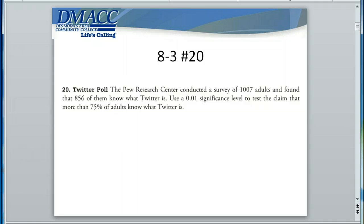When we perform hypothesis testing, one of the first things we want to do is identify the claim, formulate our hypotheses, and identify what type of tailed test we're dealing with. The claim is that more than 75% of adults know what Twitter is, so we're testing a population proportion — namely that the population proportion of adults who know what Twitter is is greater than 75%. Greater than 75% tells us this is the alternative hypothesis, because we're talking about greater than, not equals.